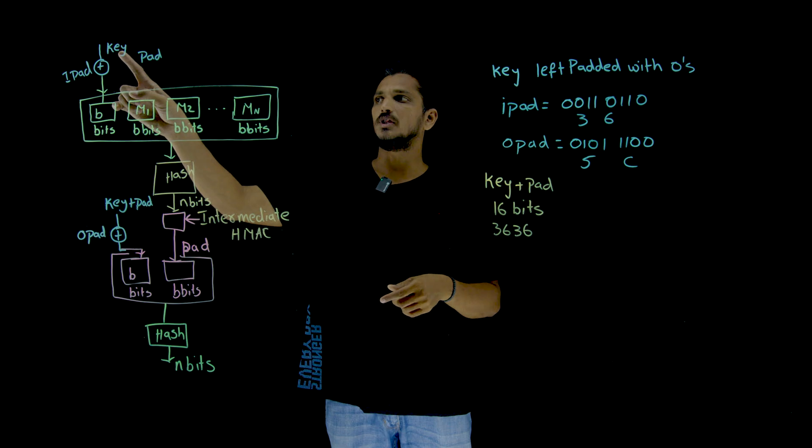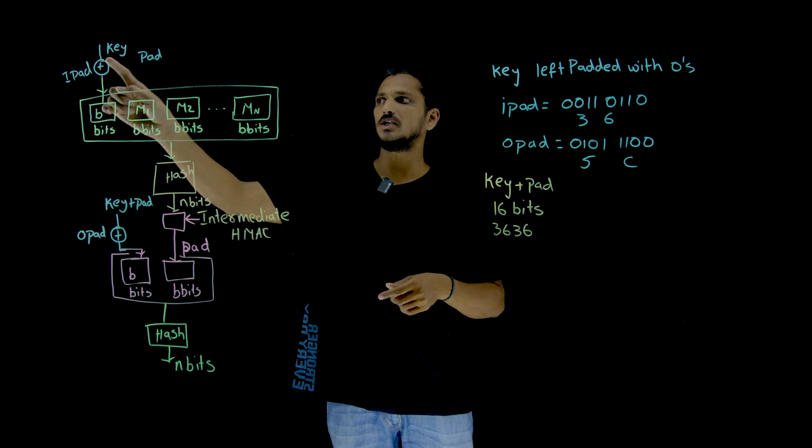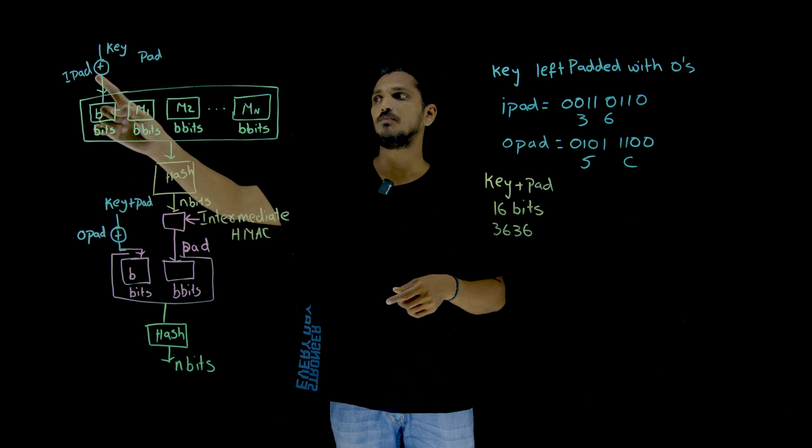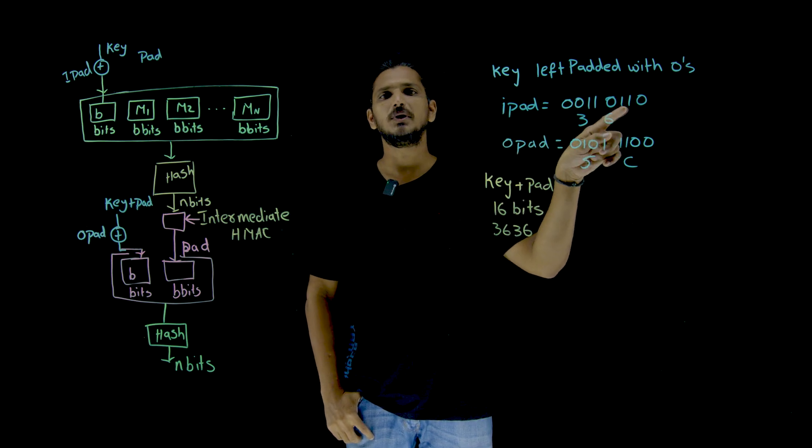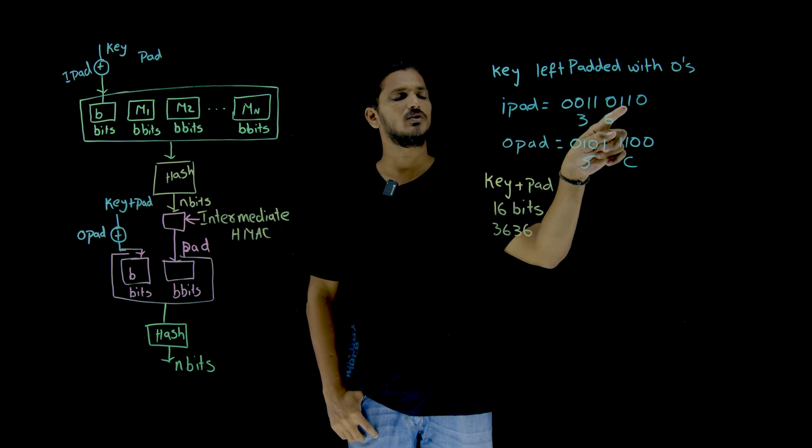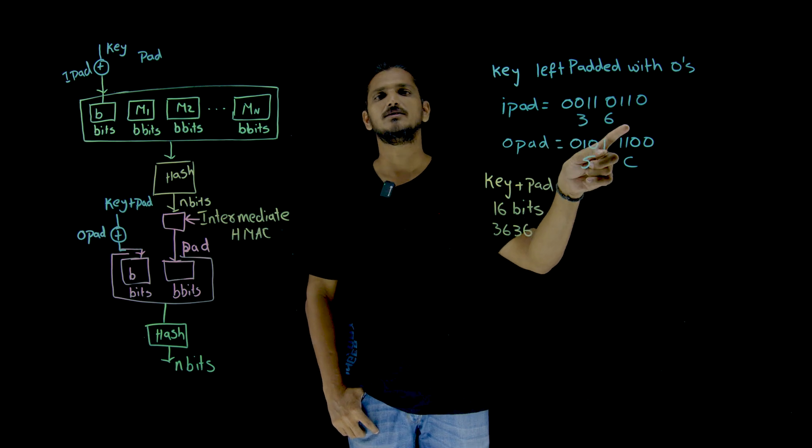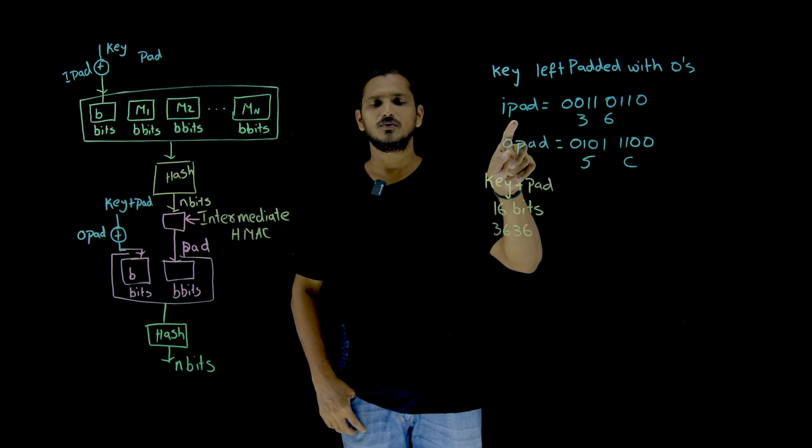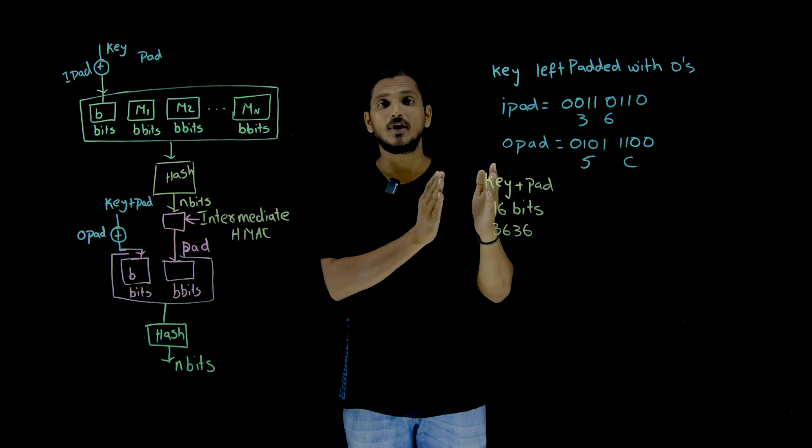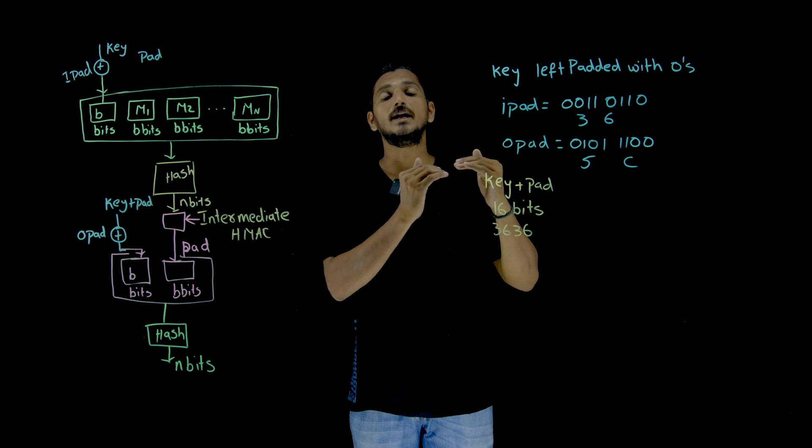So now the b bit key is sent into the exclusive OR with iPad. What is meant by iPad? iPad is this 8 bit value 00110110 in hexadecimal 36. We take this iPad value.